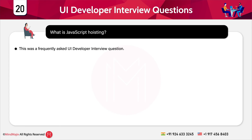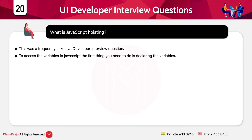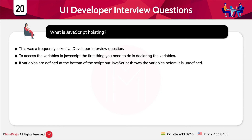The next question is: what is JavaScript hoisting? This is one of the very frequently asked UI/front-end developer interview questions. To access variables in JavaScript you must first declare them. If variables are defined at the bottom of the script, JavaScript throws them to the top as undefined — in JavaScript, only declared variables are hoisted.